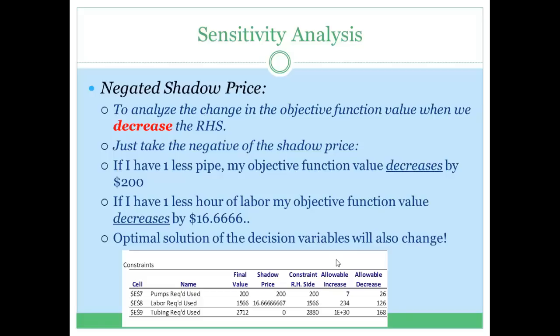Let's talk about negated shadow price. Negated shadow price tells you how much your objective function value would change if you were to decrease the right-hand side of a constraint by a single unit. If we decrease the right-hand side of constraint 1 by 1 unit, the shadow price effect is minus 1 times 200. So decreasing constraint 1 by 1 unit decreases the objective function value by 200. In summary: when increasing the right-hand side, read the shadow price as-is from the table. If it's negative, it decreases your objective function value; if it's positive, it increases your objective function value.